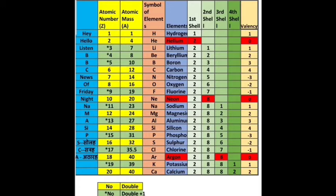Hello students, today we are going to touch on chemistry. In this lesson, we will learn atomic numbers 1 to 20, their atomic masses, and their electronic configurations. But before we switch to our topic, you must know what exactly atomic number and atomic mass are.